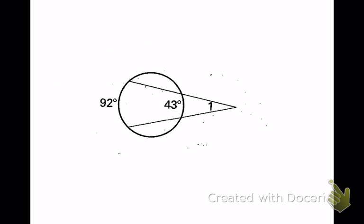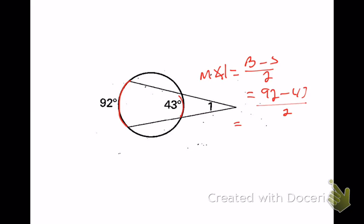Quick example: to find the measure of angle one, we use big minus small divided by two. The big arc inside the angle is 92, minus the small arc inside the angle which is 43, divided by two. This gives 49 divided by two, which is 24.5 degrees.